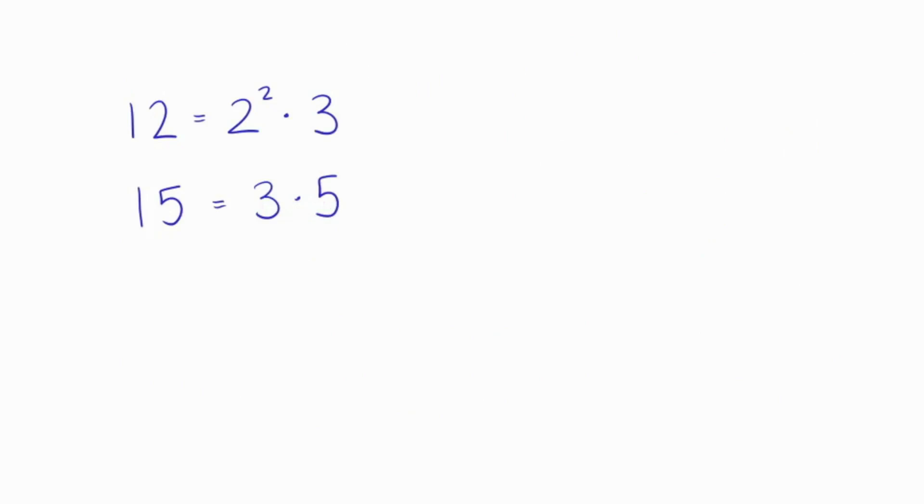If we're writing numbers, not blocks, it's really the same game under a different notation. I write 12 as 2 squared times 3, 15 as 3 times 5, and their GCD is 3.